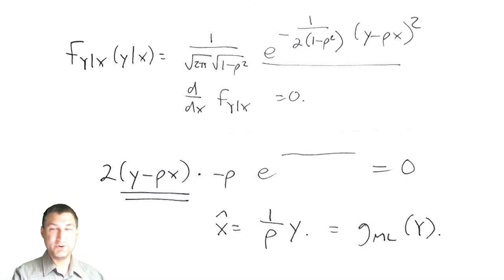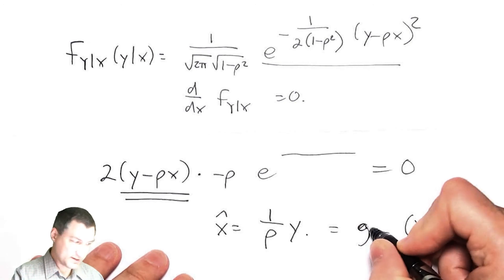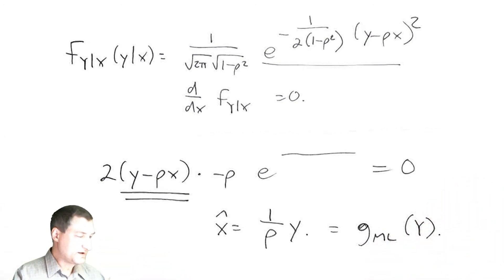The takeaway is: you should always try to do the MAP estimate if you can, but in cases where you don't know what the prior is, you can do the maximum likelihood estimate with the understanding that your error will be more than it could be if you had known the underlying distribution of x.